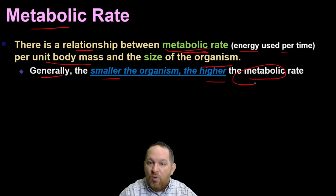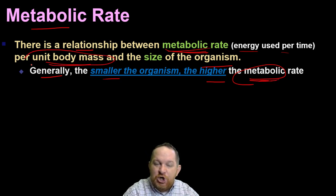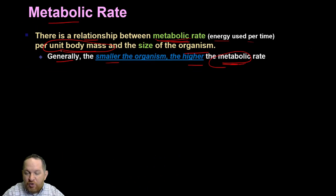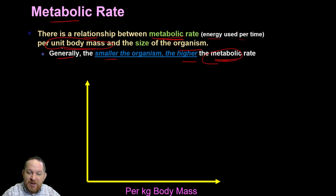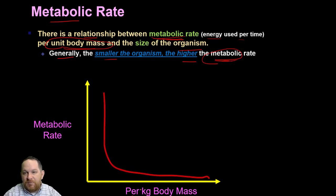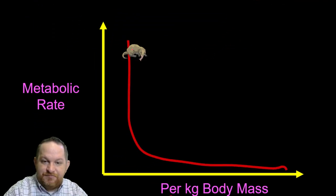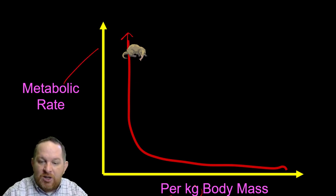In general, the smaller the organism, the higher the metabolic rate per body mass unit. This can be a little tricky, so I made a graph here to help explain. If we compare metabolic rate to per kilogram of body mass, what we'd see is that the smaller organisms have a higher metabolic rate per kilogram of body mass.